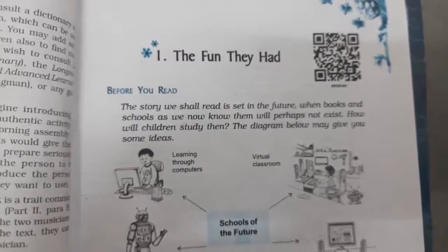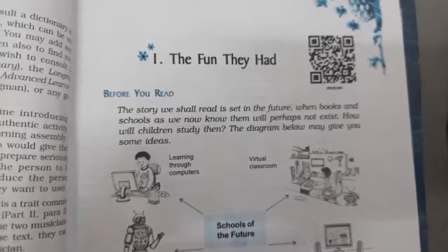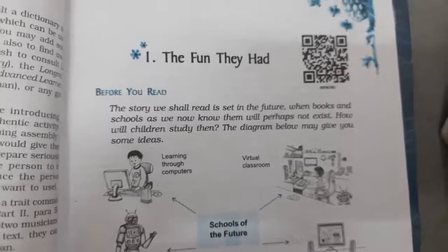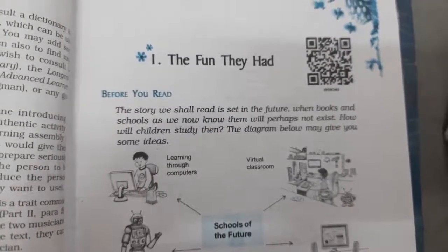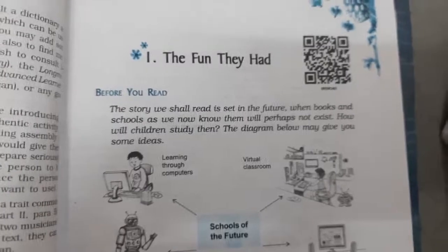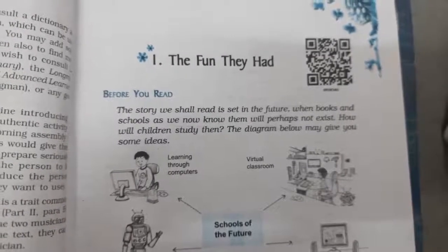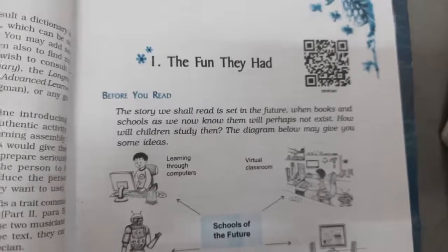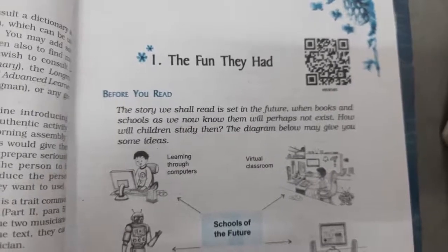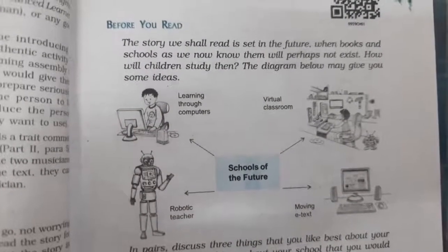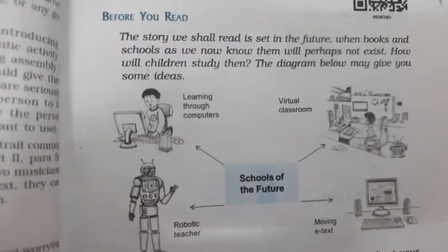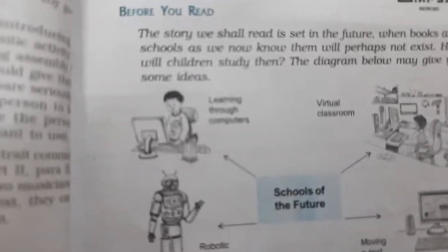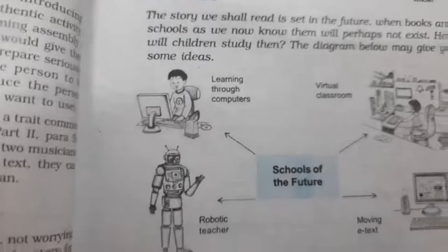Yahaan per aapke diya hoa hai chapter mein 'before you read': The story we shall read is set in future where books and schools as we now know them will perhaps not exist. Kanika matlab yeh joh chapter hai, yahaan future ke joh schools hai. Aap yahaan per diagram dhek sakti ho. Is diagram mein joh future hai usmei kaisi school hoogi, uske baren bataay gaya hai. Dekhye, is prakar se learning joh hai wo computer ke dwara kiya ja raha hai.